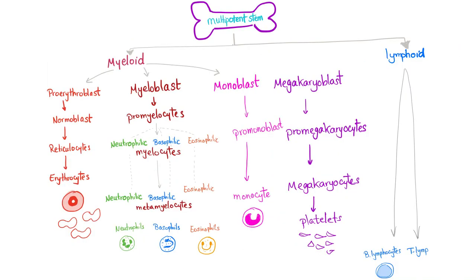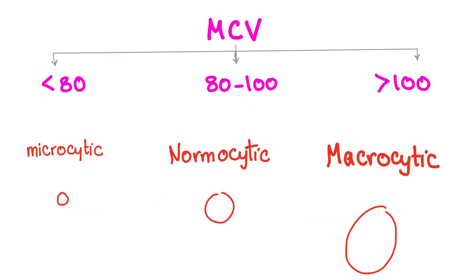Here is a slide about hematopoiesis. The myeloid stem cells will give us the RBCs, and they go through many steps until they become mature RBCs. Reticulocytes are the baby RBCs. MCV always determines the type of anemia — microcytic, normocytic, or macrocytic.